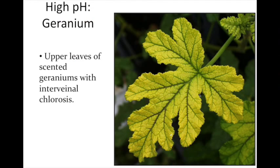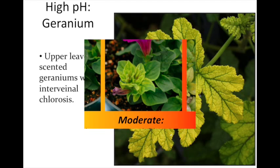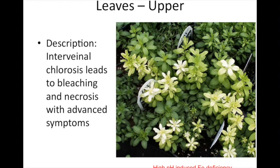I showed this slide earlier. Interveinal chlorosis of the upper foliage — we see here on a dragon wing begonia — denotes the pH is too high. Here's a really severe case on a scented geranium, and you can see the classical interveinal chlorosis. The veins are green, the rest is yellow. The same progression occurs — initial yellowing between the veins, more severe in the middle when it's moderate, and then it will bleach out when it's extremely high. Here's a case of a Calibrachoa that has been grown too long at a high pH — you can see how it's white, with a few brown spots from sunburn.